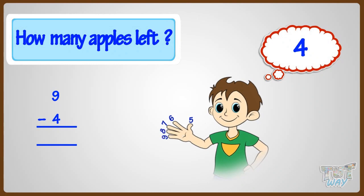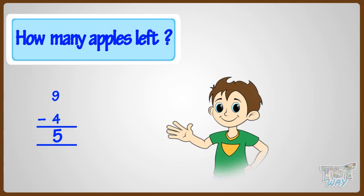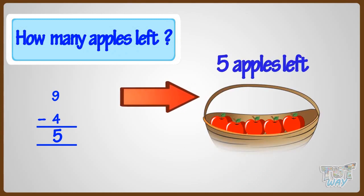Now count the fingers. One, two, three, four, five. Yeah! Five. Nine minus four equals five. We did it! Five apples left in the basket.